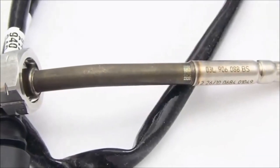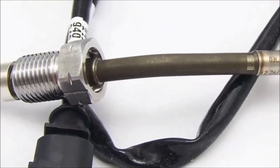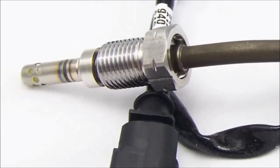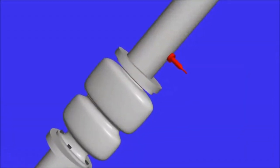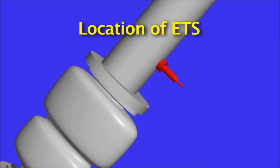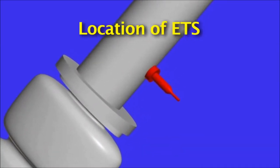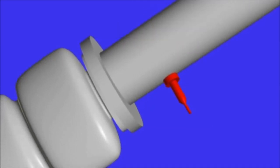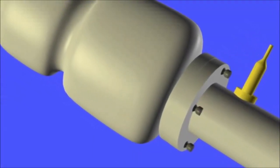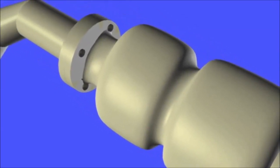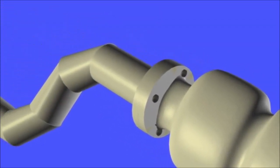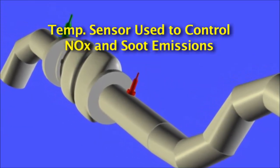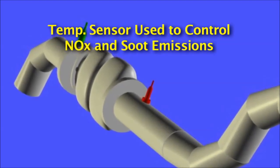During cold start of a GDI engine, homogeneous operation can be employed due to higher exhaust gas temperatures, resulting in a shorter time for catalyst light-off. Gasoline engines do not normally emit soot emissions, but soot emissions can occur at very rich mixtures. However, GDI engines emit soot at stratified charge operation, as there can be areas within the cylinder with very rich mixtures. Also in GDI engines, if mixture formation is not realized at full loads, soot emissions can increase.